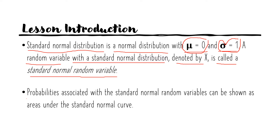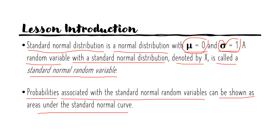Probabilities associated with standard normal random variables can be shown as areas under the standard normal curve. The areas under your standard normal curve are equal to the probabilities under your probability distribution. That's why when dealing with your table, we always check if the total sum of probabilities is equal to 1, because that 1 is simply the total area of your normal curve.